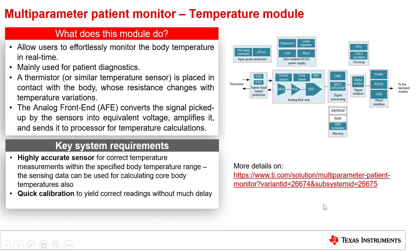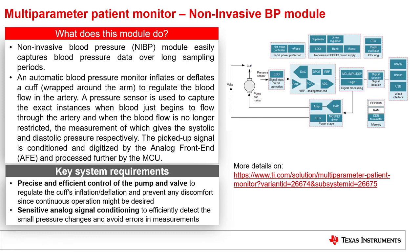The fourth module is the non-invasive blood pressure, or NIBP, module. This module easily captures blood pressure data over long sampling periods. An automatic blood pressure monitor inflates or deflates a cuff to regulate the blood flow in the artery. A pressure sensor captures the exact instance when blood just begins to flow through the artery, and when the blood flow is no longer restricted. The measurement gives the systolic and diastolic pressure, respectively. The picked-up signal is conditioned and digitized by the analog front end, or AFE, and processed further by the MCU.